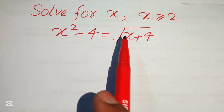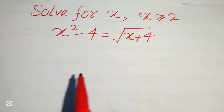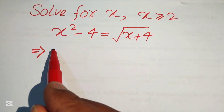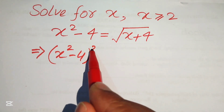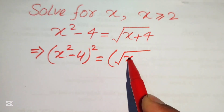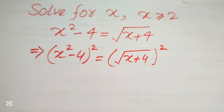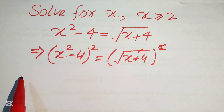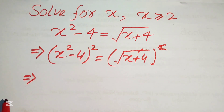First we need to remove the radical sign on the right hand side, so we take squares on both sides. We write it as x squared minus 4 whole square equals to square root of x plus 4 whole square. On the right hand side, the square and square root cancel each other, and on the left hand side we apply the square identity.